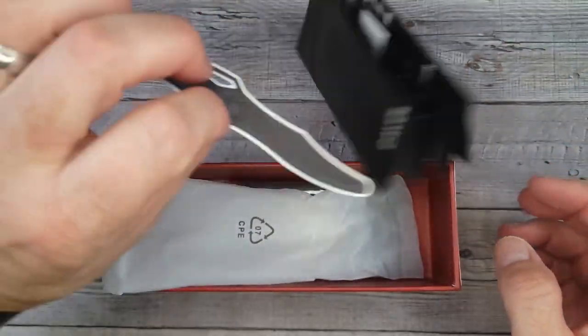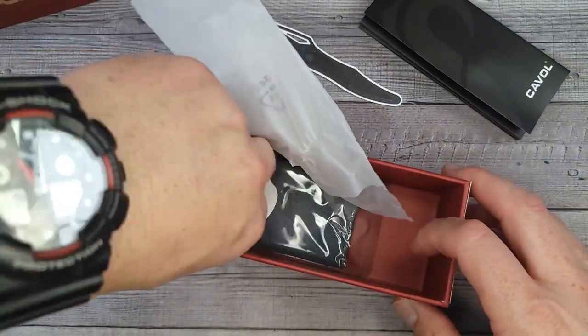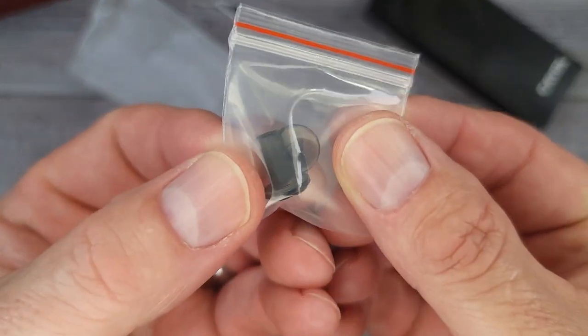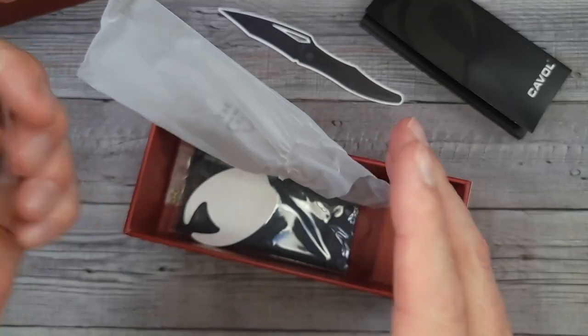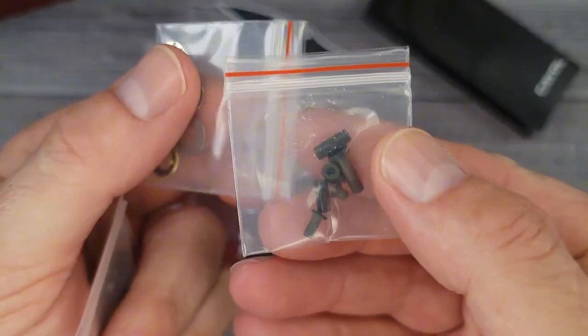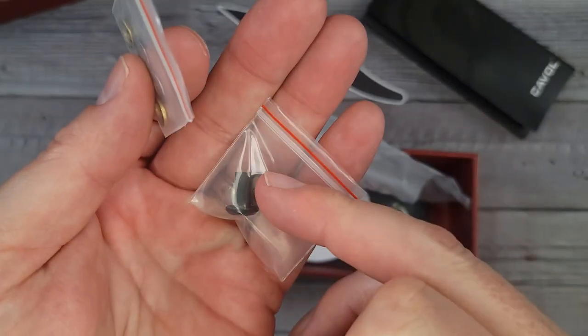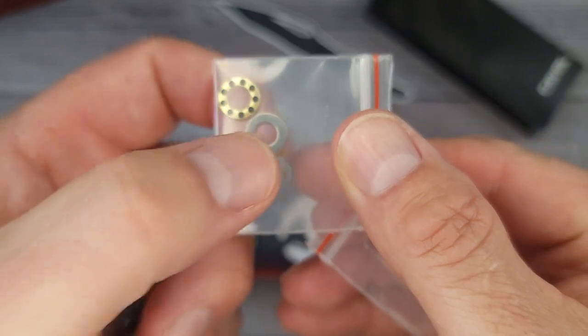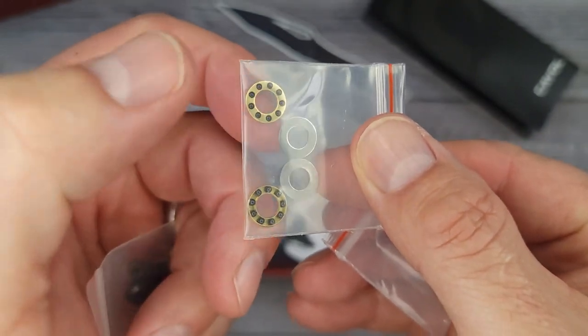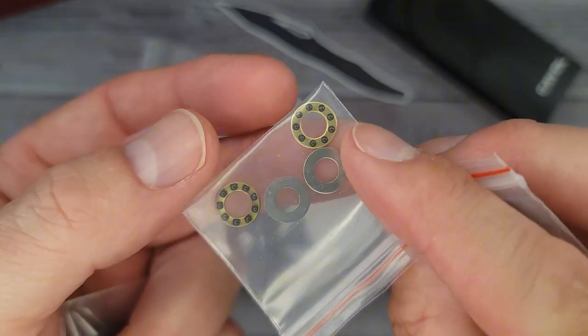If you open it up and look down here, it comes with all kinds of accoutrement, stickers and all that fun stuff. One of the impressive things - it comes with a complete set of replacement hardware. It comes with all the hardware, another pivot, washers, and more captive ceramic ball bearings. Would you look at that?